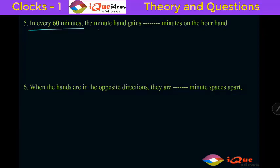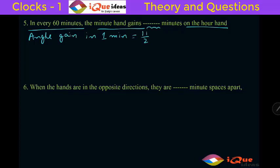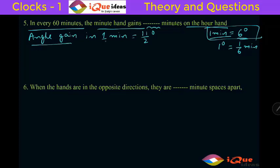In every 60 minutes, the minute hand gains how many minutes on the hour hand? The angle gain in 1 minute is 11 by 2 degrees. We also know that 1 minute space equals 6 degrees, so 1 degree equals 1 by 6 minutes. Therefore the time gain per minute is 11 by 2 divided by 6, which equals 11 by 12 minutes.